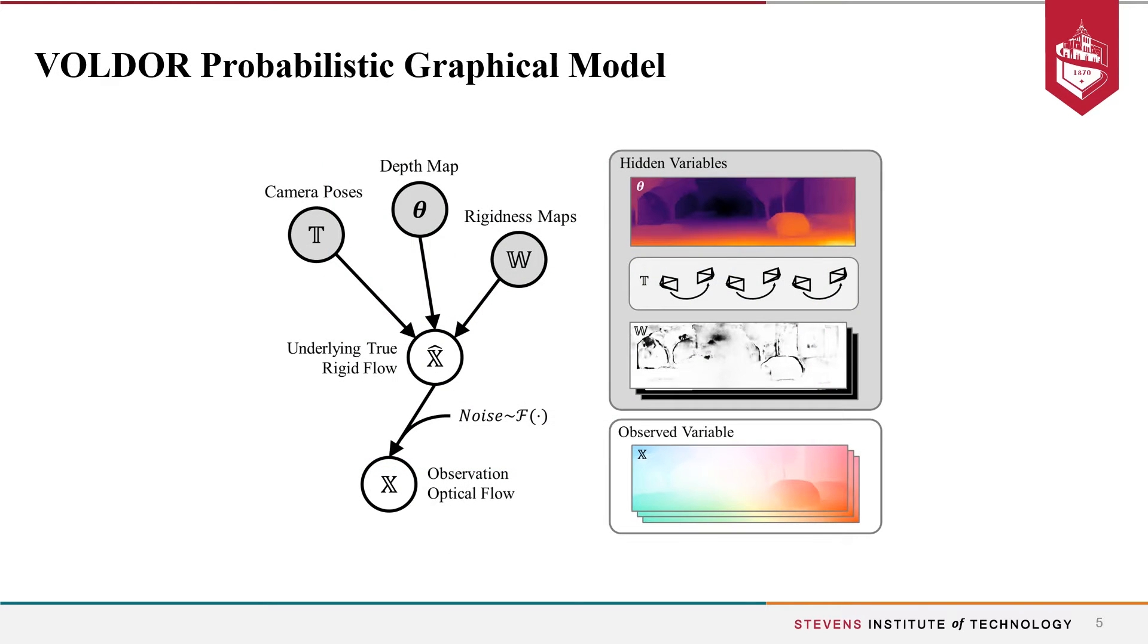We integrated the problem under a probabilistic model where camera poses, depth map, and rigidness maps are modeled as hidden variables, while the optical flow fields are modeled as observed variables, subject to a Fisk distributed residue.